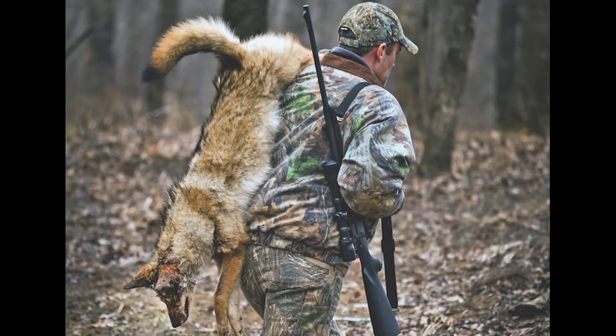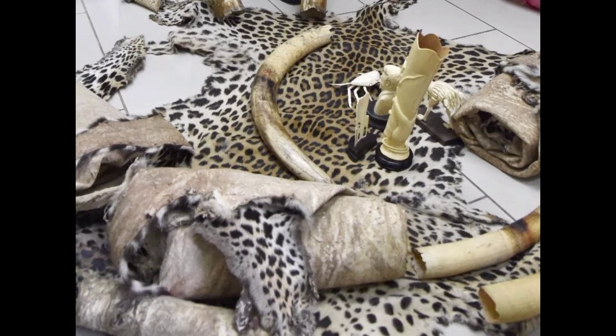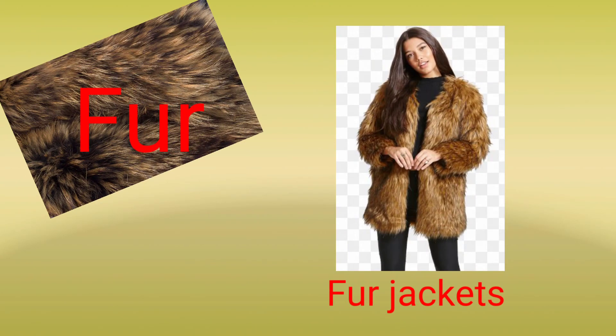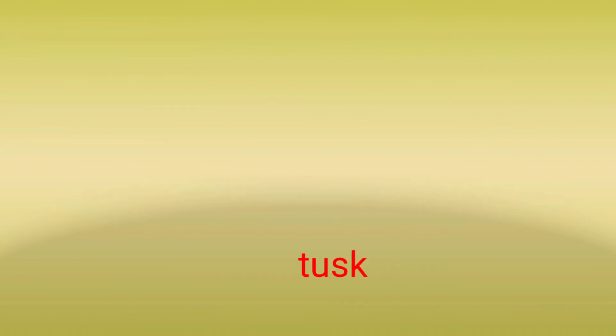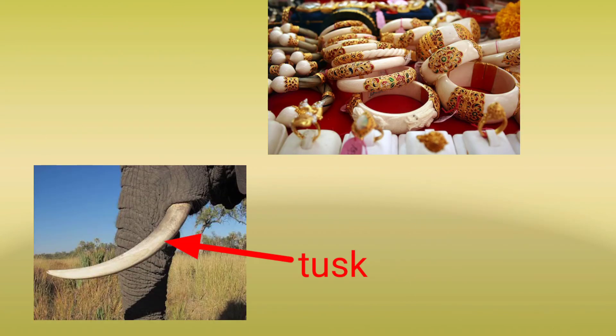Hunting and killing of animals for their body parts should be banned. We should also avoid using things made from animal parts such as fur, skin, and tusks. This will discourage the hunting of wild animals.